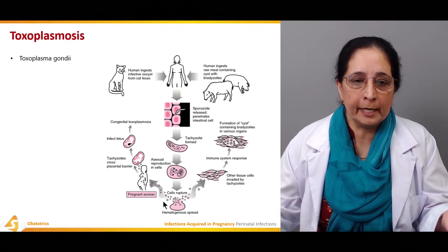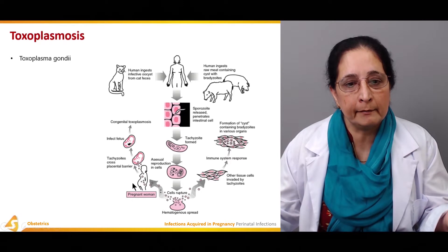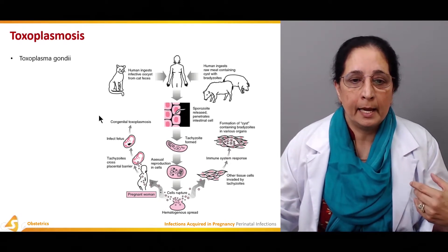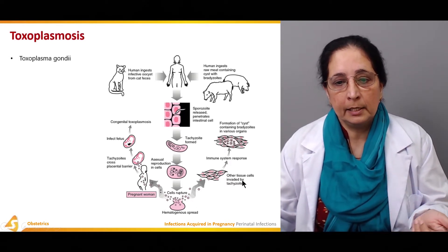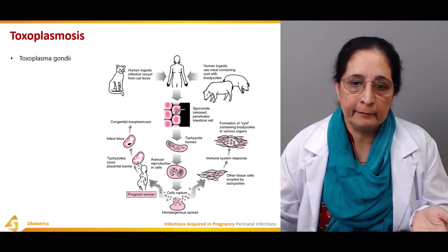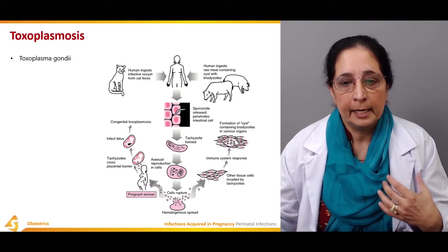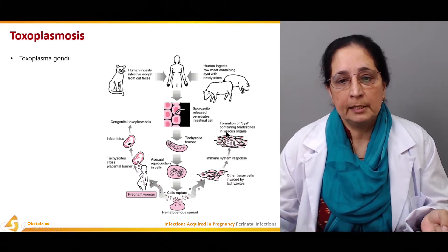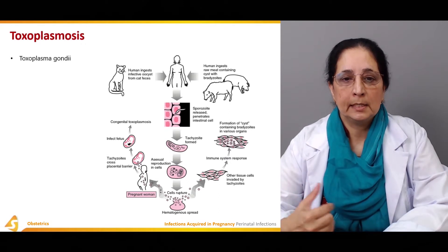If the woman is pregnant, then the tachyzoites cross the placental barrier and cause infection of the fetus, resulting in congenital toxoplasmosis. In other cases, the tachyzoites invade other tissues, the immune system responds to that invasion, and there is formation of cysts containing bradyzoites in various organs.